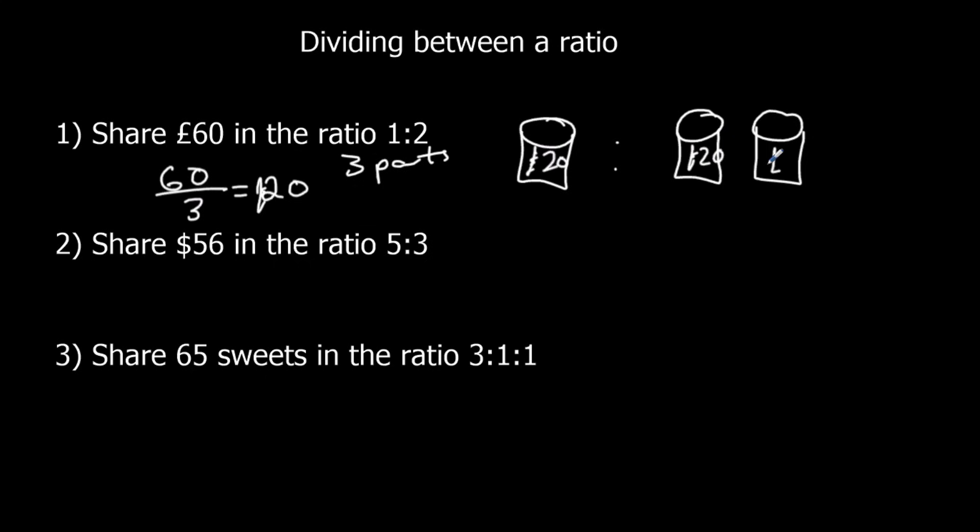So 20, 20, and 20. So we've got 20, 1 times 20. And we've got 2 times 20, so 40.